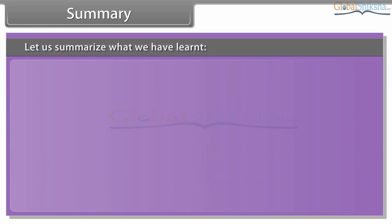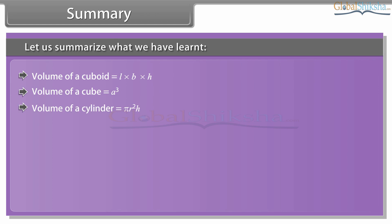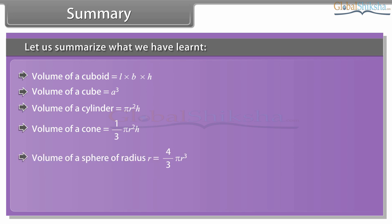Let us summarize what we have learned. Volume of a cuboid equals L into B into H. Volume of a cube equals A cube. Volume of a cylinder equals pi r square h. Volume of a cone equals 1 upon 3 pi r square h. Volume of a sphere of radius r equals 4 upon 3 pi r cube. Volume of a hemisphere equals 1/2 into 4/3 into pi r cube, which equals 2 upon 3 pi r cube.